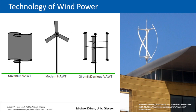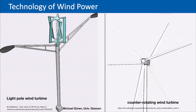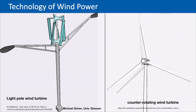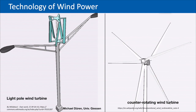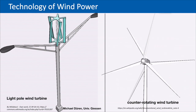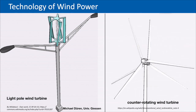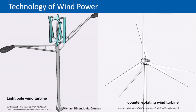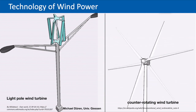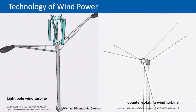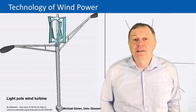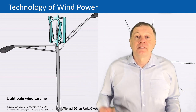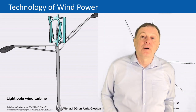Engineers have invented many variations with different concepts, costs, and efficiencies. A vertical axis wind power station on top of a light pole is a nice idea — the cabling is already there and you could add wind power to every light pole in areas with enough wind. Another concept uses counter-rotating turbines, which increases efficiency but costs more material. With one generator and different technology, you have to decide if the additional cost is worth the extra output.